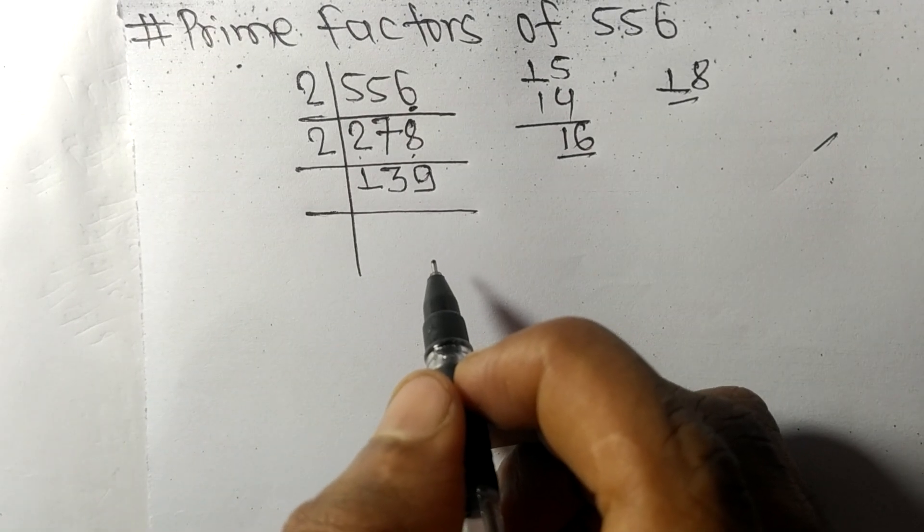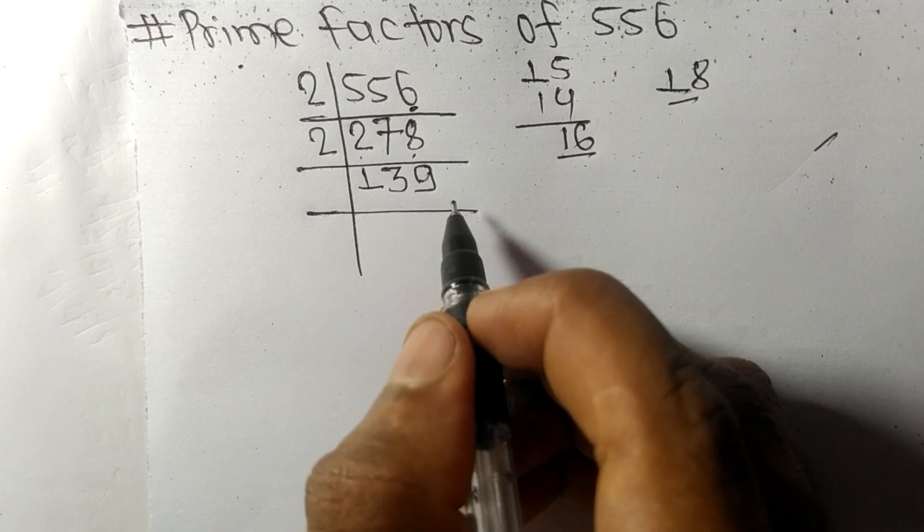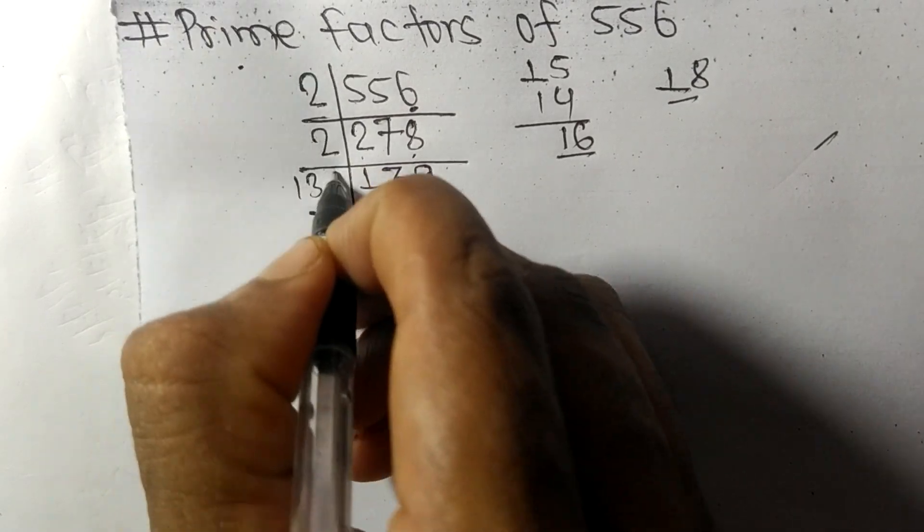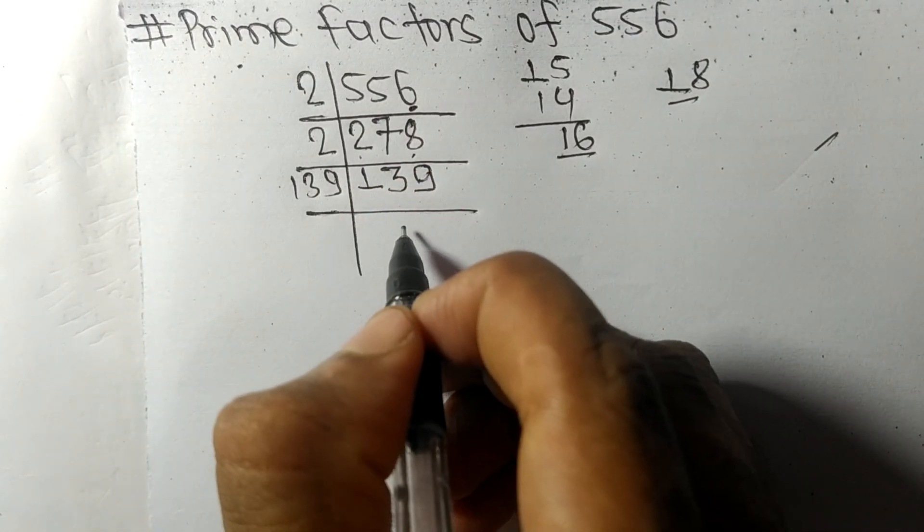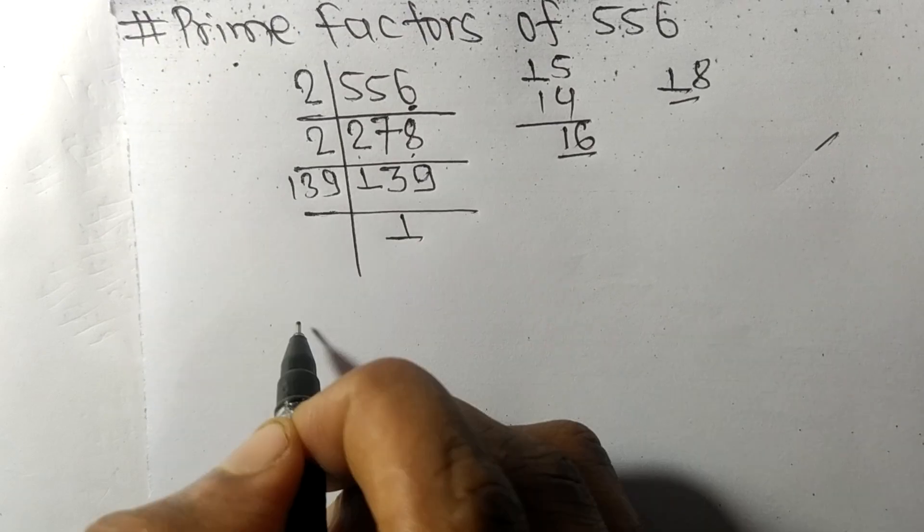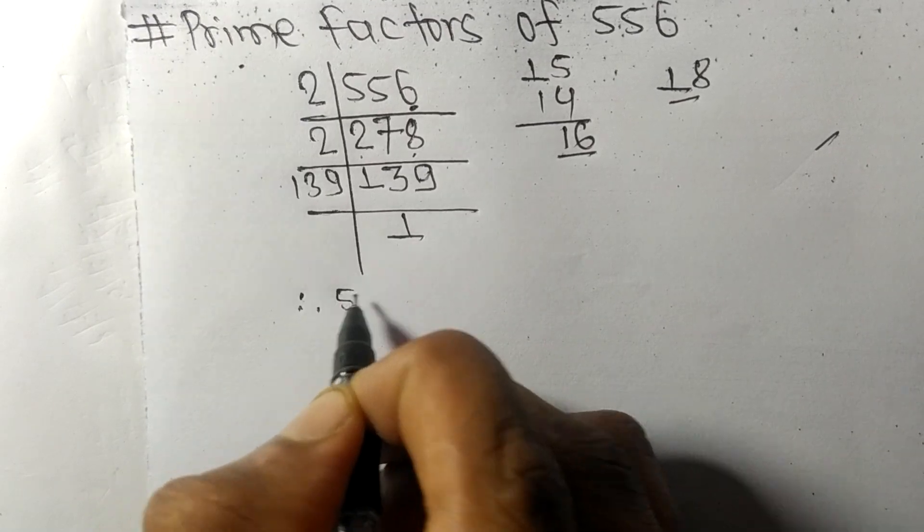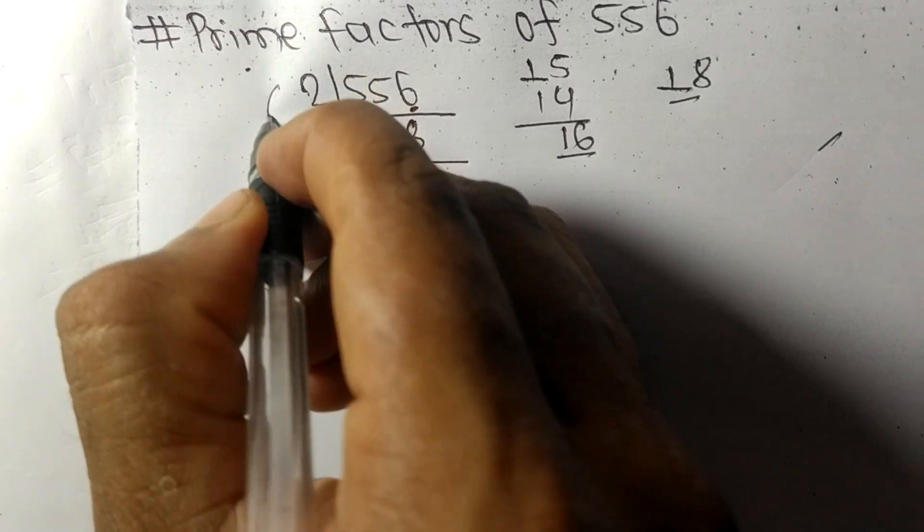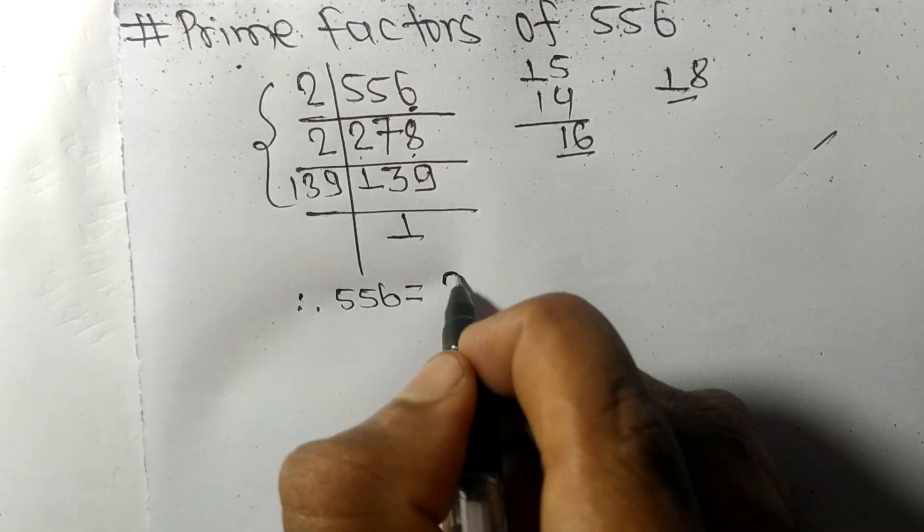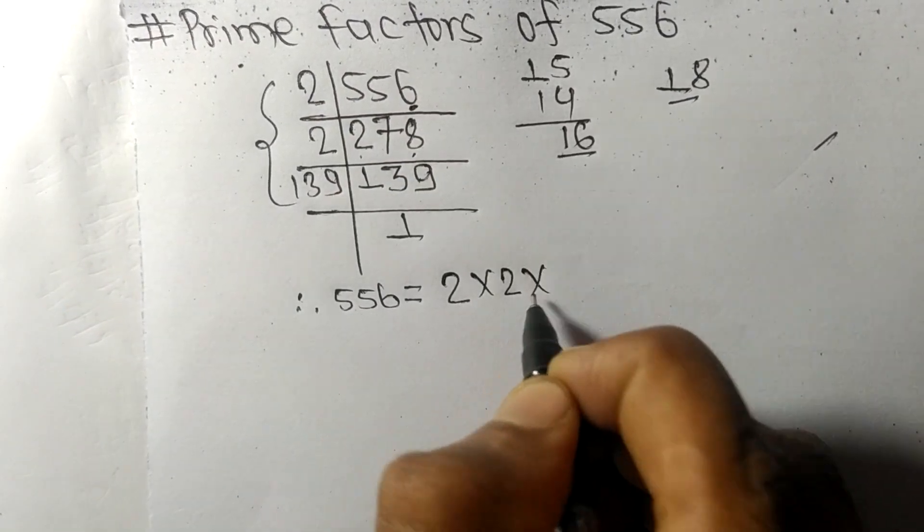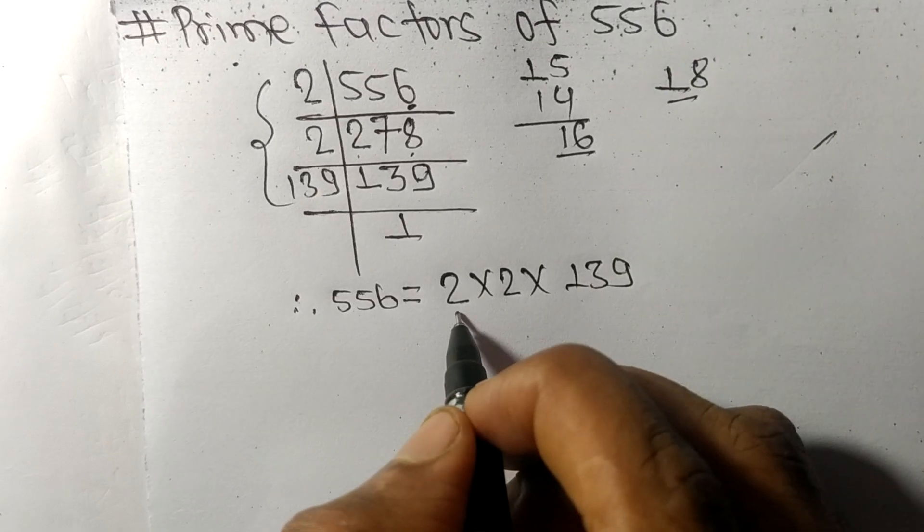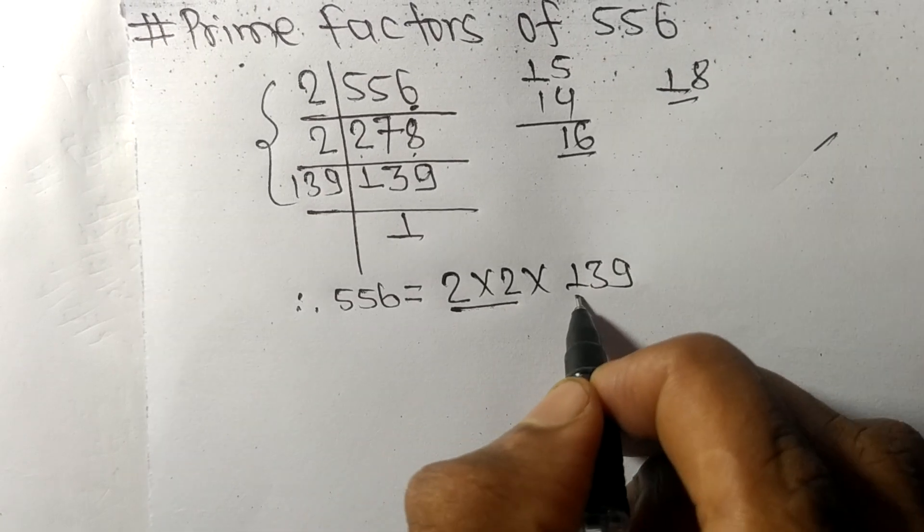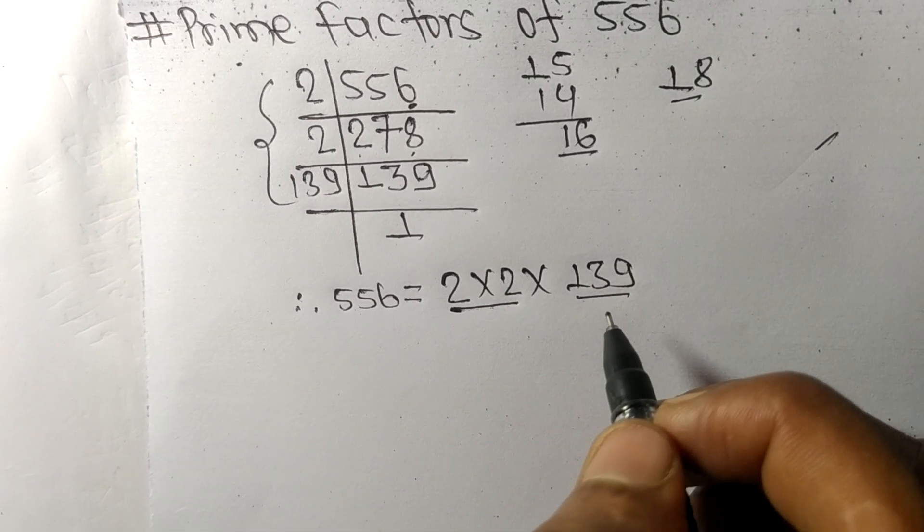139 is divisible by 139 itself, and we get here 1. Therefore, 556 is equal to, from this side, 2 times 2 times 139. So these 2 and 139 are the prime factors of 556.